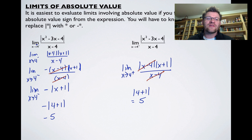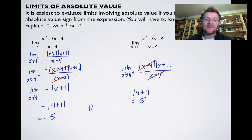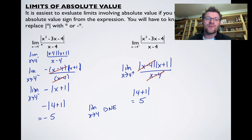Since approaching x from the negative side of 4 gives negative 5, and from the positive side gives positive 5, we get two different numbers. That means the limit as x approaches 4 does not exist. When dealing with absolute value, always check the limit from both the negative and positive sides to make sure you get the same answer either way.